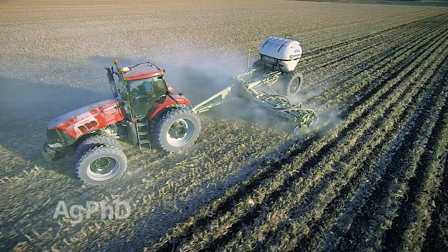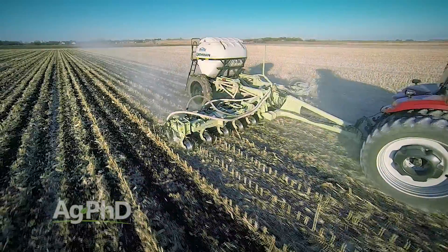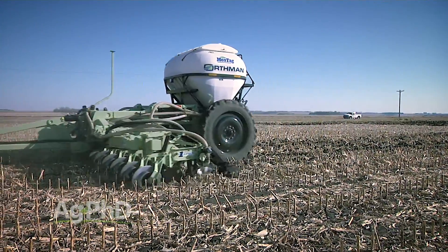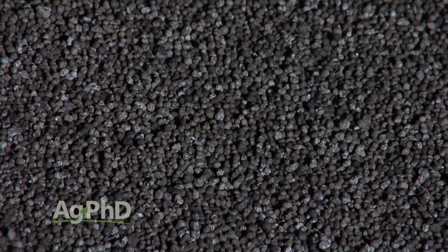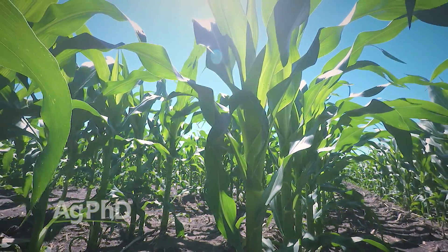If you want to spend less money on phosphorus, banding is a lot more efficient than broadcasting. Take a 30-inch row crop like soybeans — how well are those roots really going to reach 15 inches out to the side, especially in a year where you're challenged for moisture? By putting all that phosphorus closer to the root system, efficiency goes up dramatically. Whether you're putting it right in-furrow with a safe liquid product like Pro-Germinator, going 2x2, or in strip-till banding MAP or DAP down 6 to 8 inches below the row, your root system is going to grow right through that and grab most of that phosphorus.